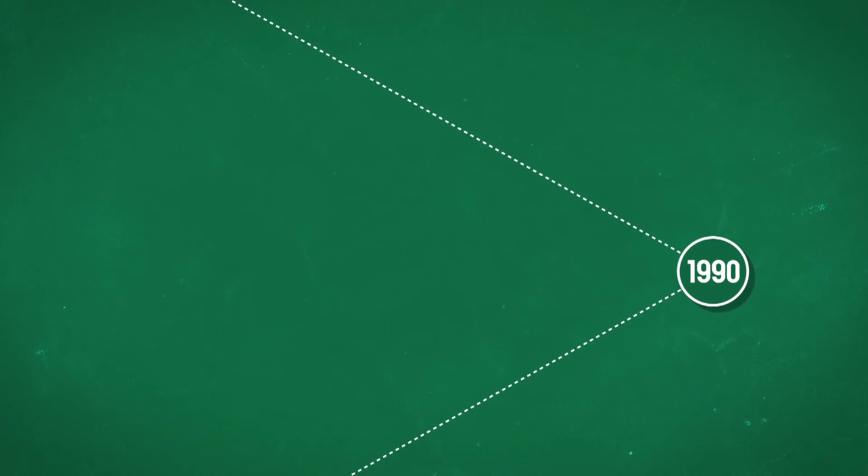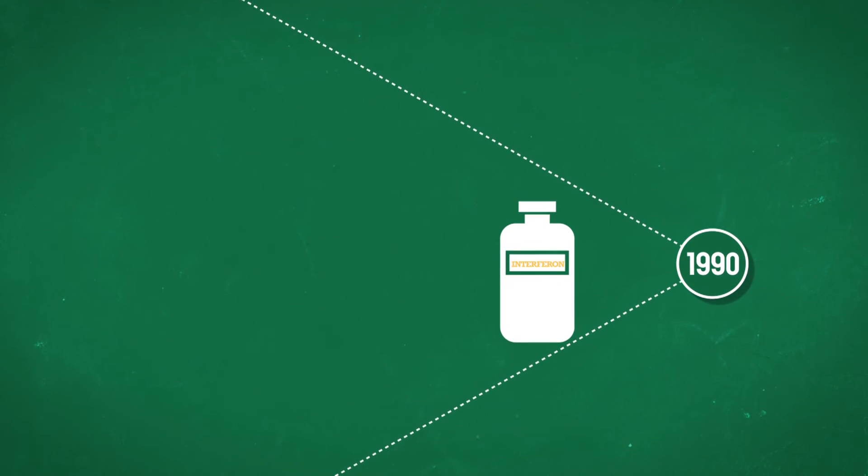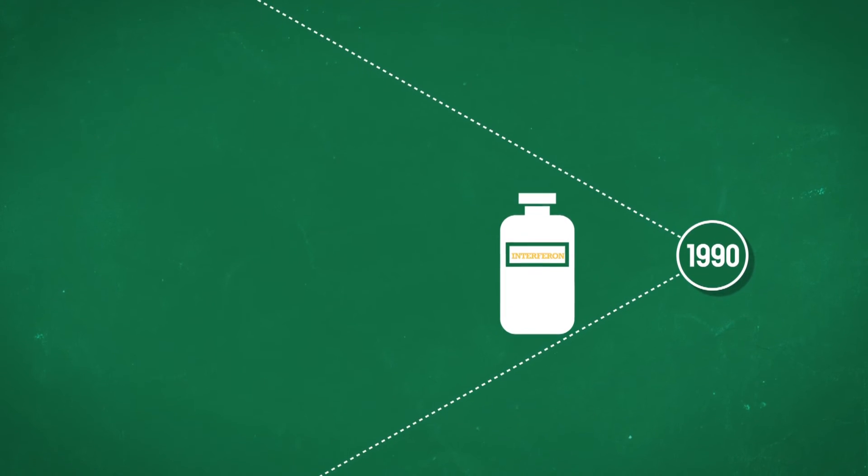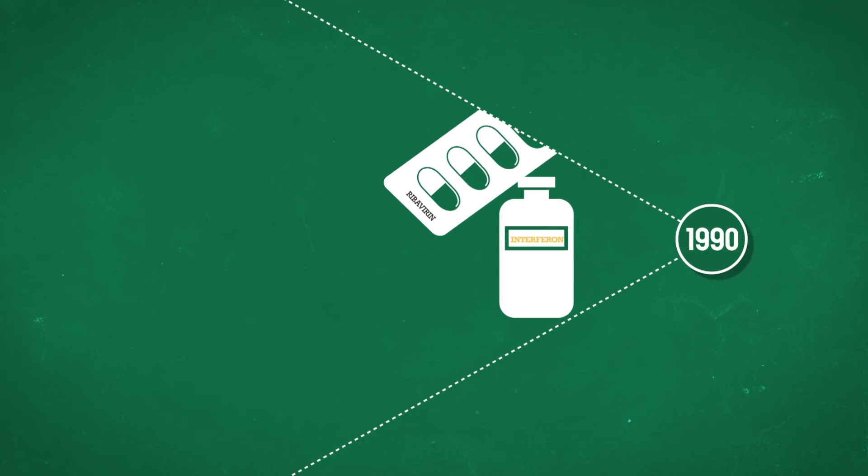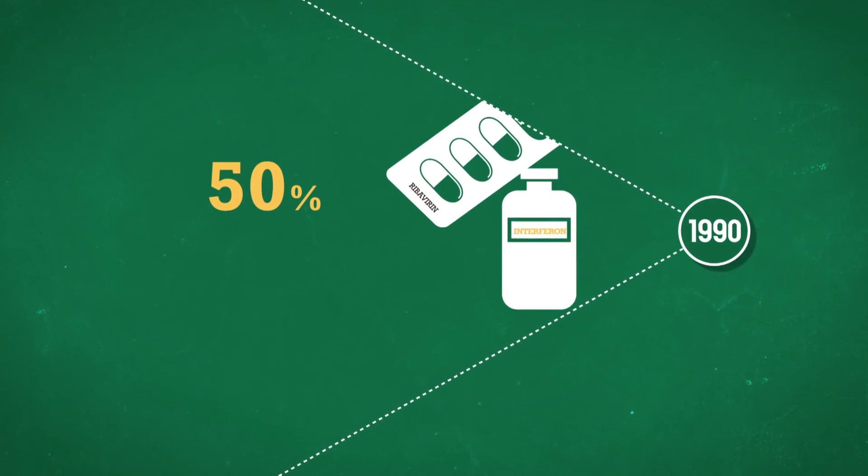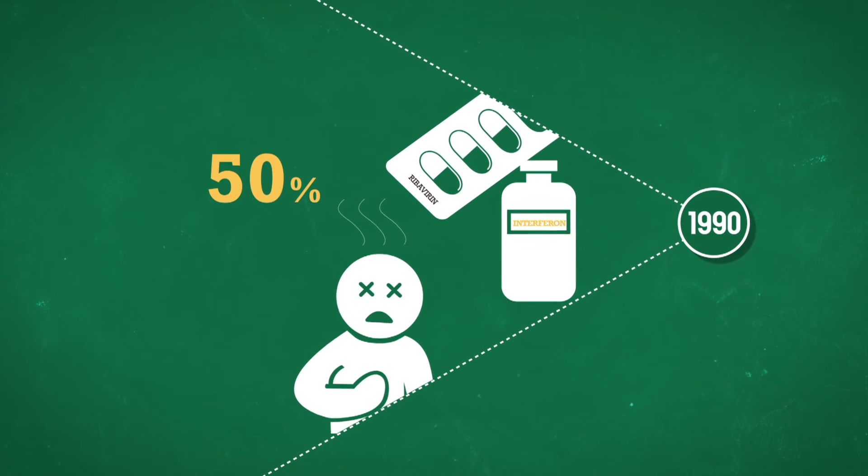Since the 1990s, hepatitis C has been treated with a combination of a protein called interferon and an antiviral, ribavirin. But the cure rate is less than 50% and side effects are common and debilitating.